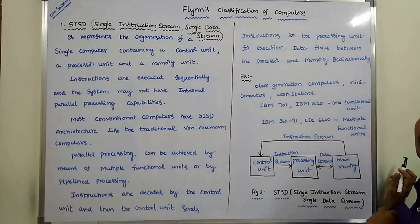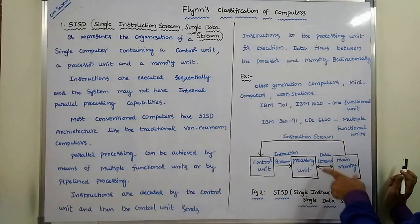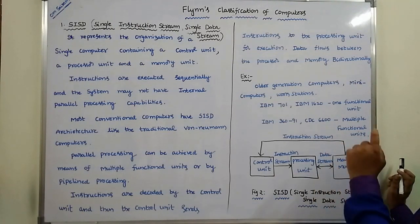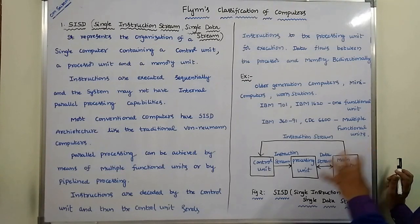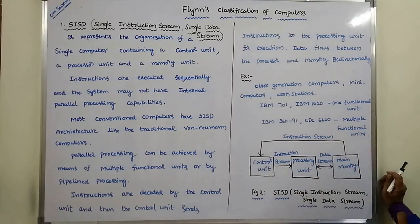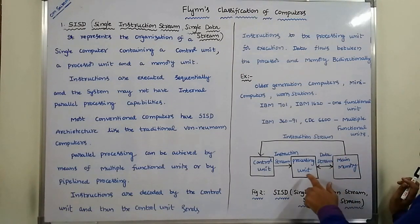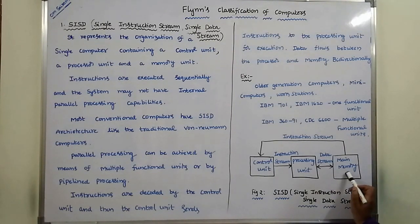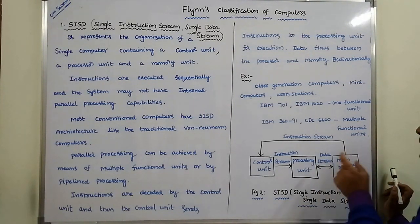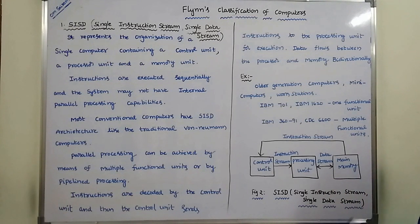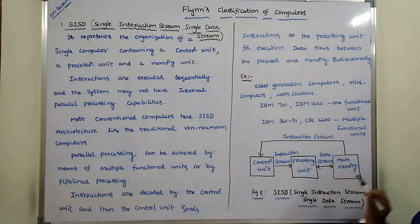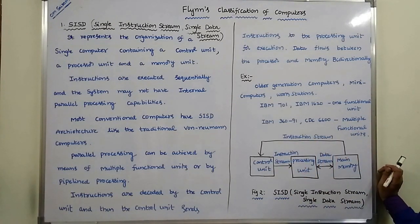The processing unit executes the instructions by taking the data from the main memory using the data stream. Whatever output is generated from the processing unit is sent back to the main memory. The data flows bi-directionally between the processing unit and main memory. This is how instructions are processed in a SISD computer.